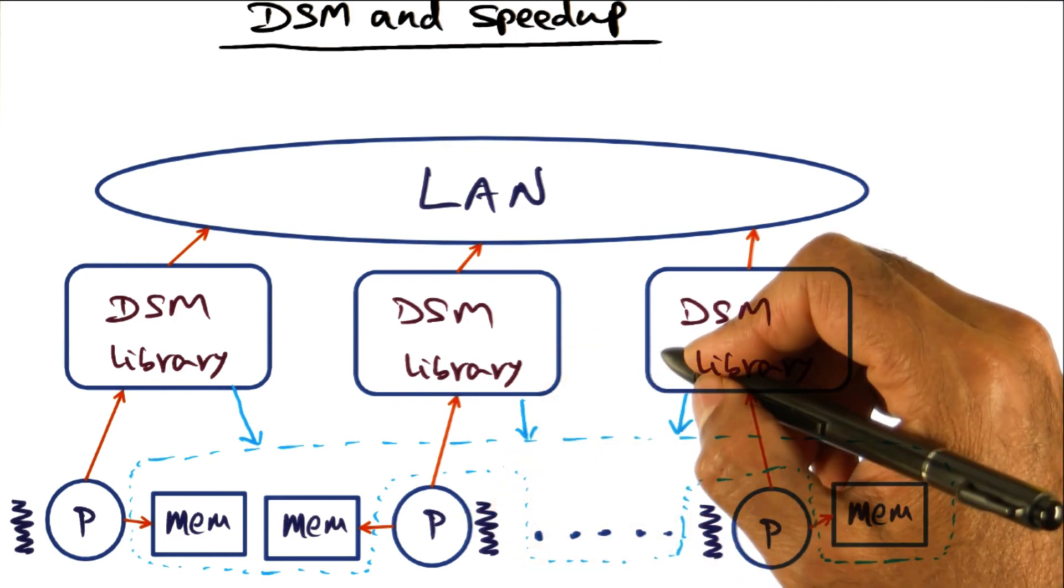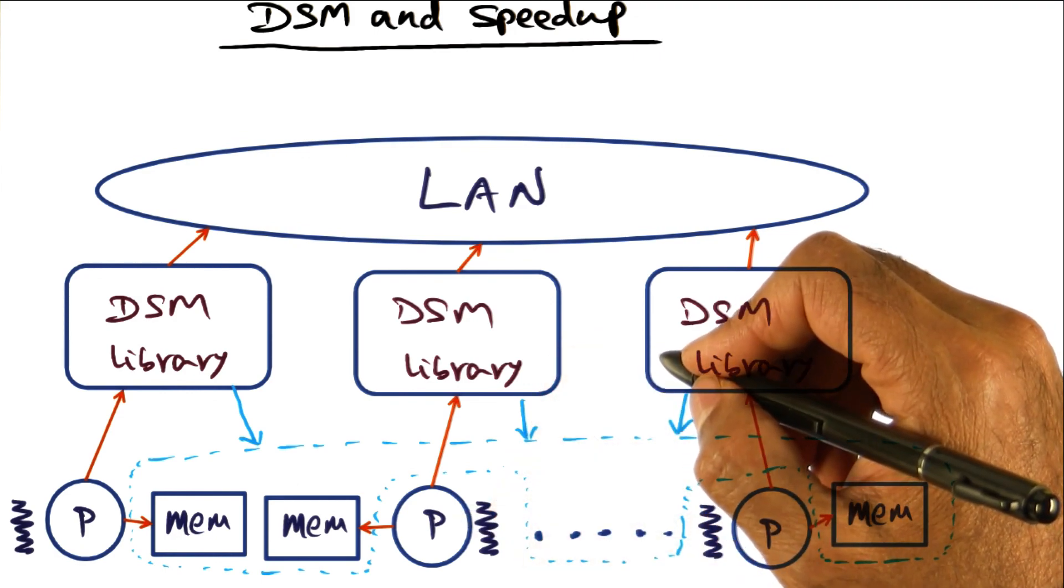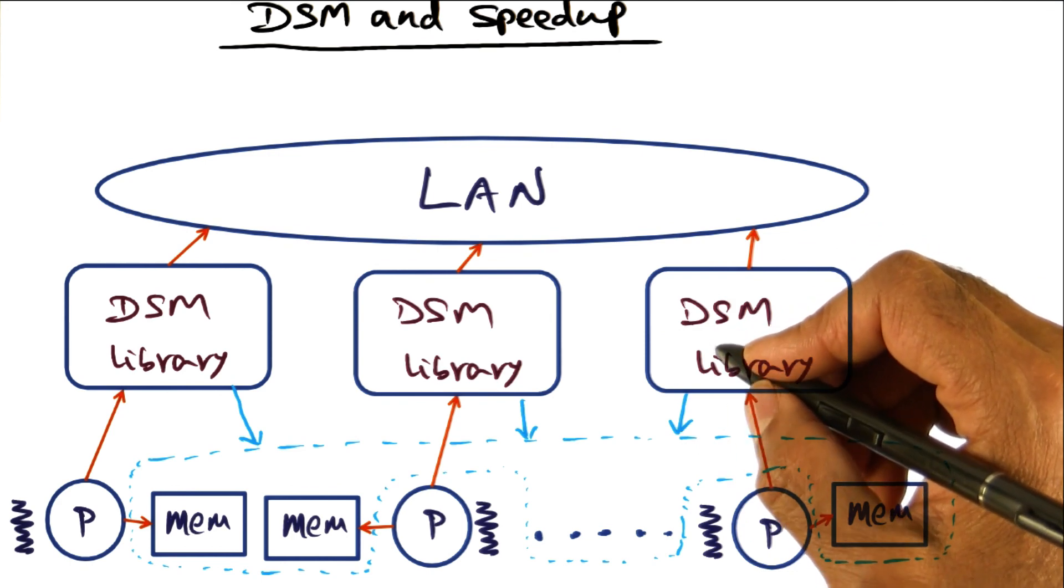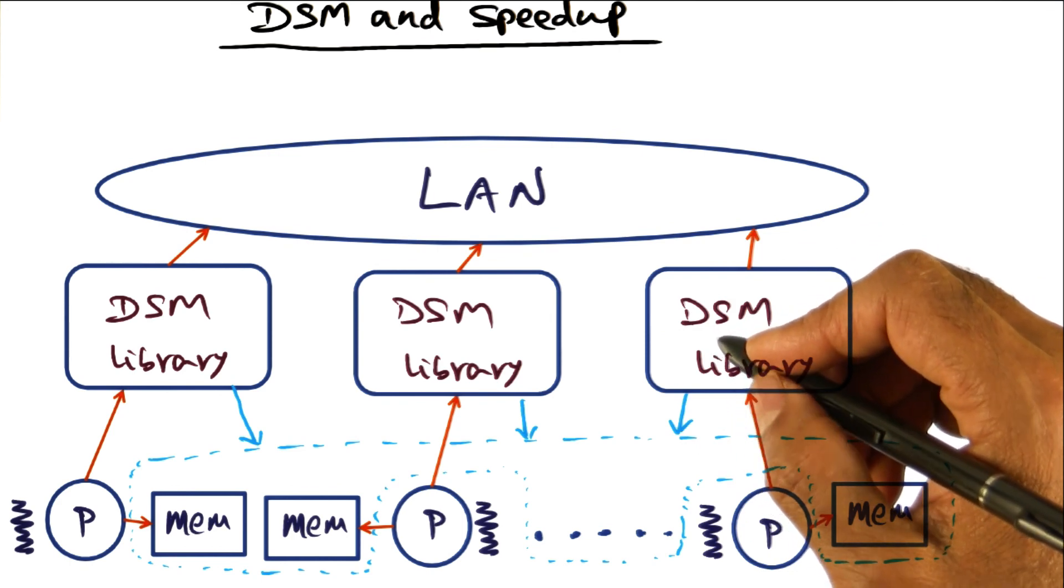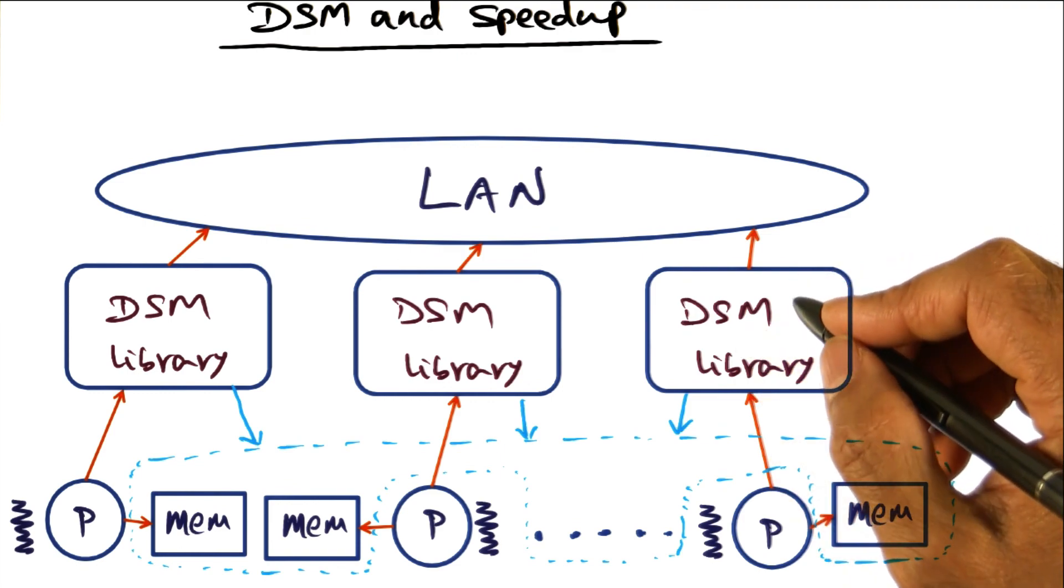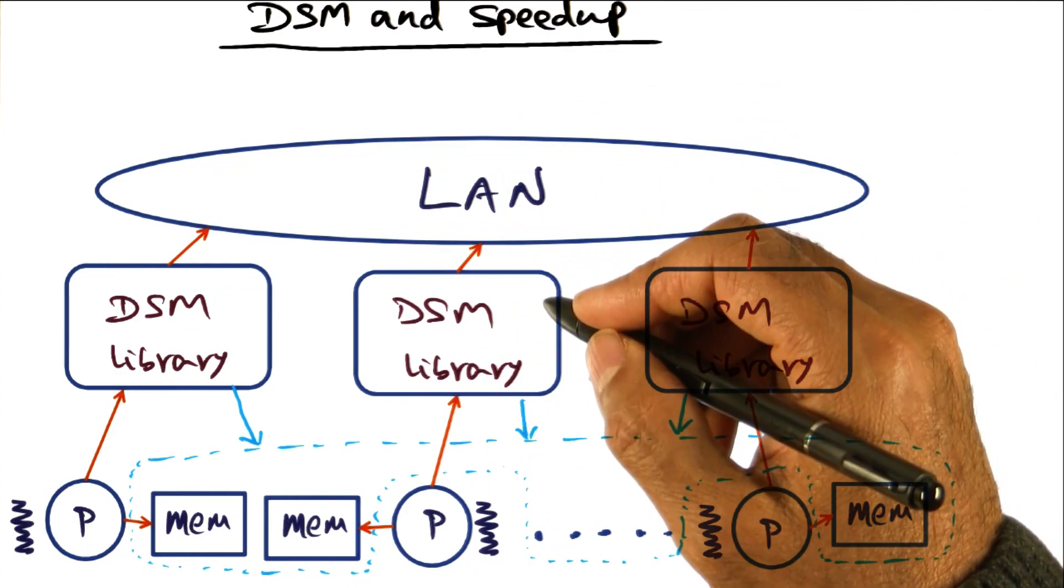So what does this mean for shared memory codes? Well basically, if the code has a lot of dynamic data structures that are manipulated with pointers, then it can lead to a lot of implicit communication across the local area network.